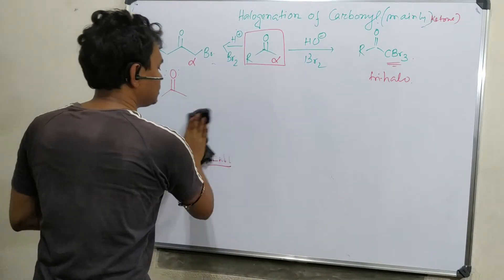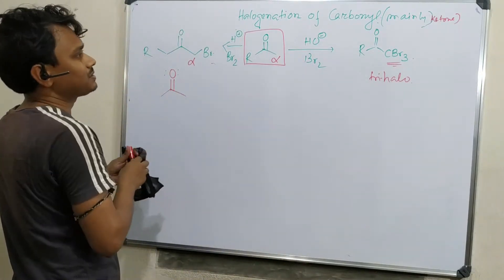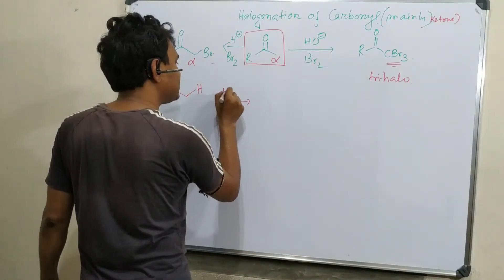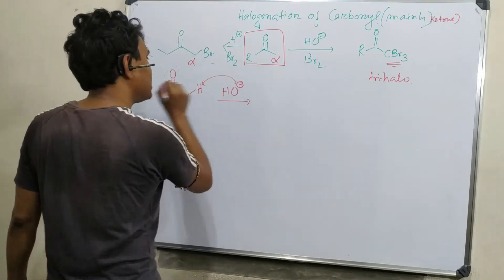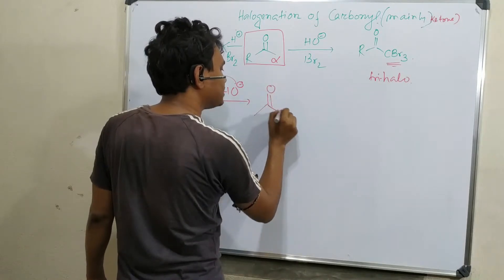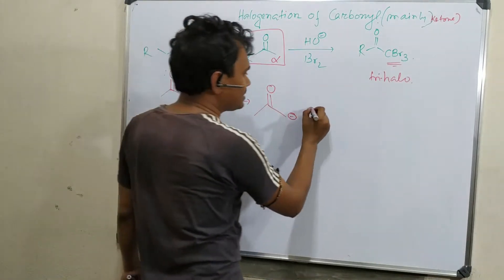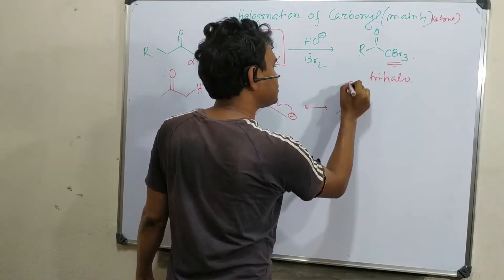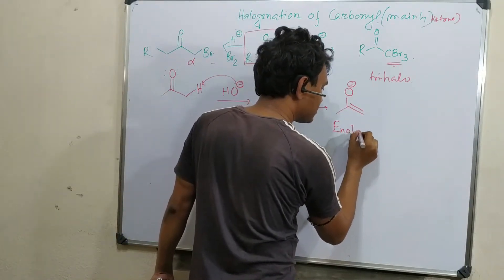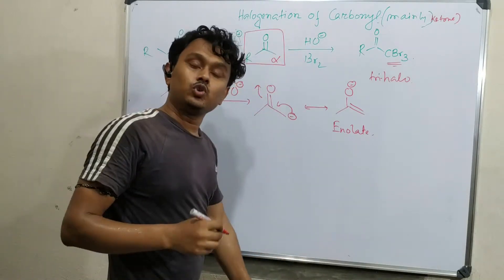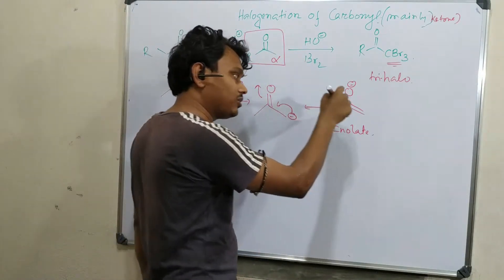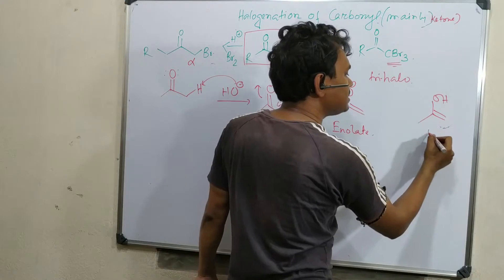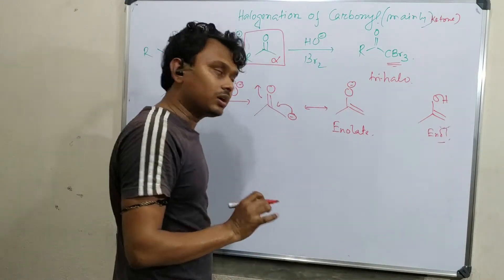But when we use base, what happens? Base catalyzed reaction is first abstraction of this proton. Base means alkaline hydroxide, sodium hydroxide, potassium hydroxide. It abstracts this and produces this carbanion, which is resonance stabilized using conjugation with the carbonyl group. So this is O minus. This is called enolate, like carboxylate. It is enol anion or enolate.